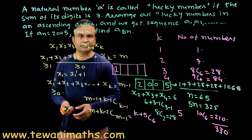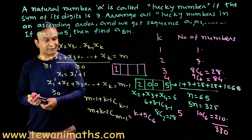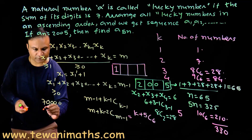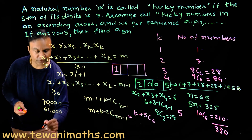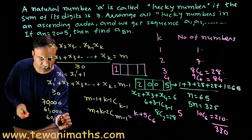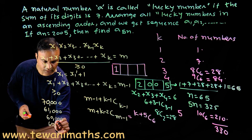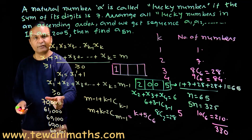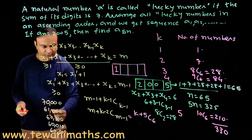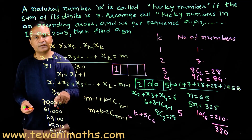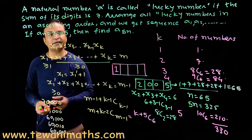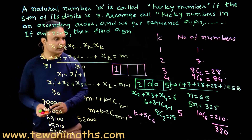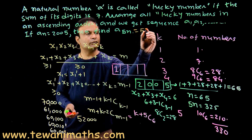So the 325th number is found by backward counting. The number with index 326 is 60001, so the 325th number is 52000. Therefore a₅ₙ = 52000.